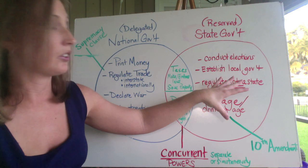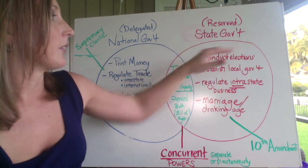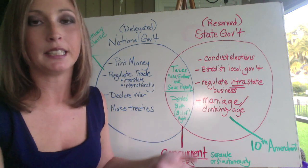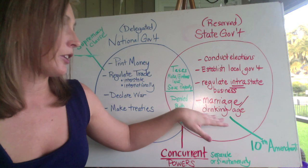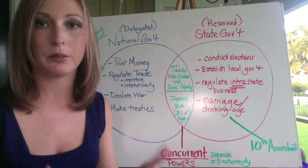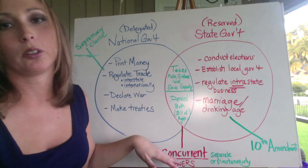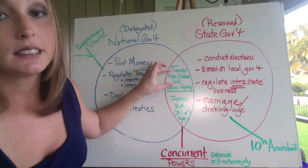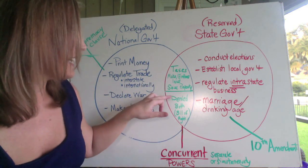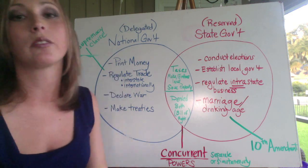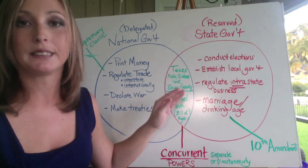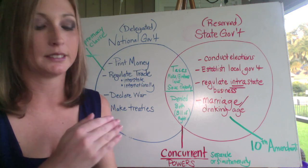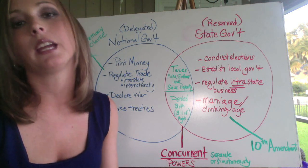The state government cannot declare war or make treaties. Instead, state governments conduct elections, establish local government, regulate intrastate business — any business that occurs within the state — and set policies such as marriage laws and drinking age. Concurrent powers are powers shared between both levels of government that can be separately or simultaneously enforced, such as the power to tax and the ability to make and enforce laws.